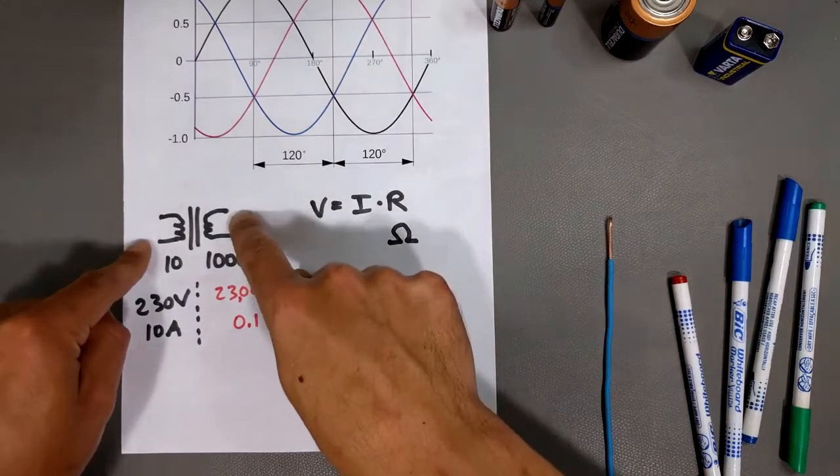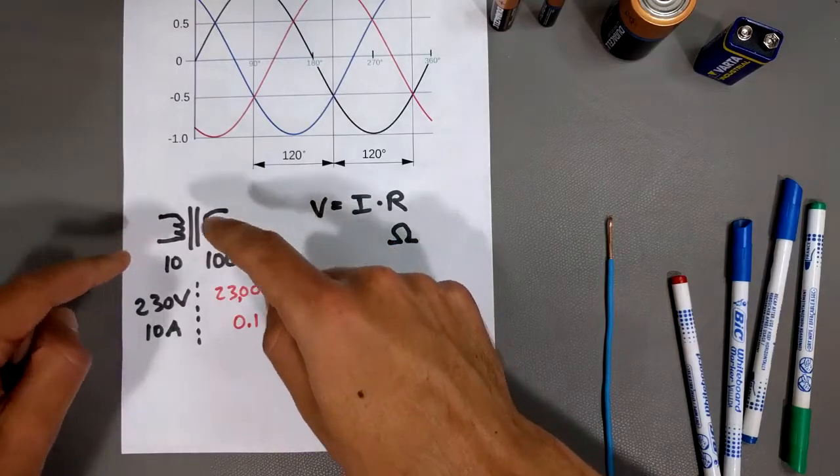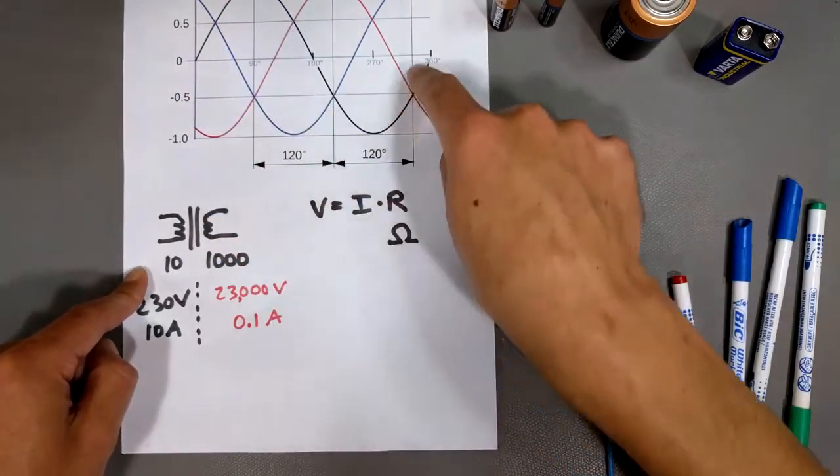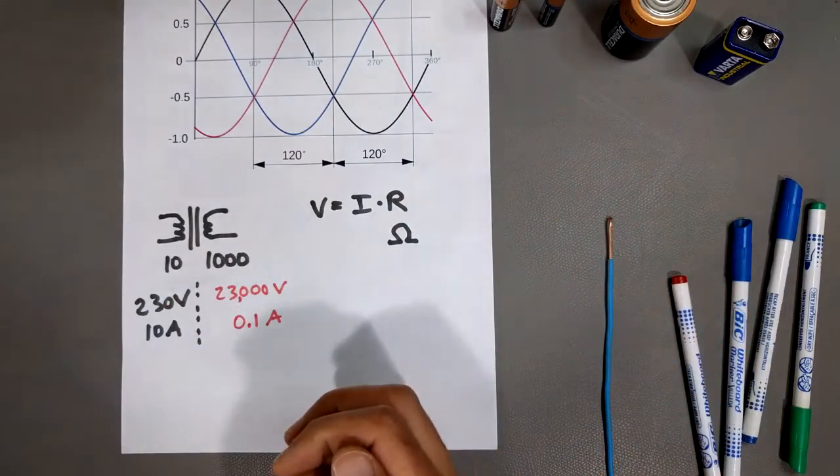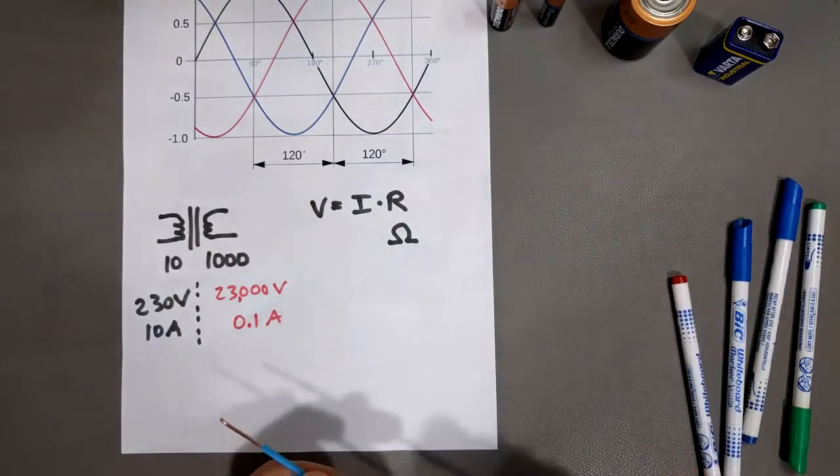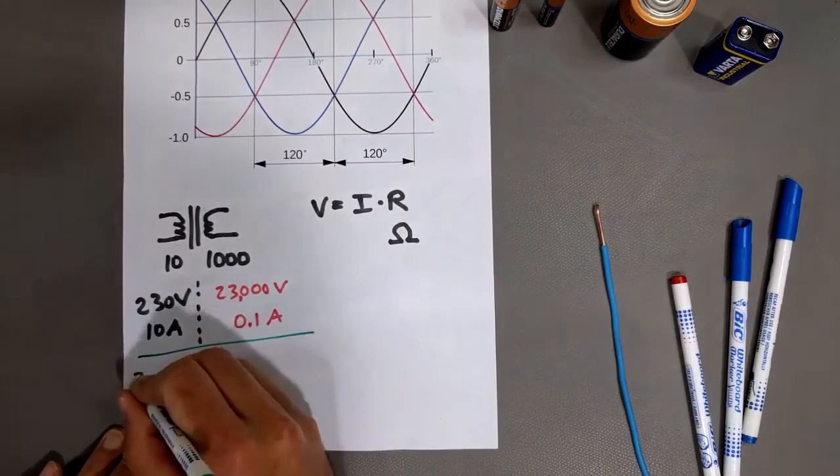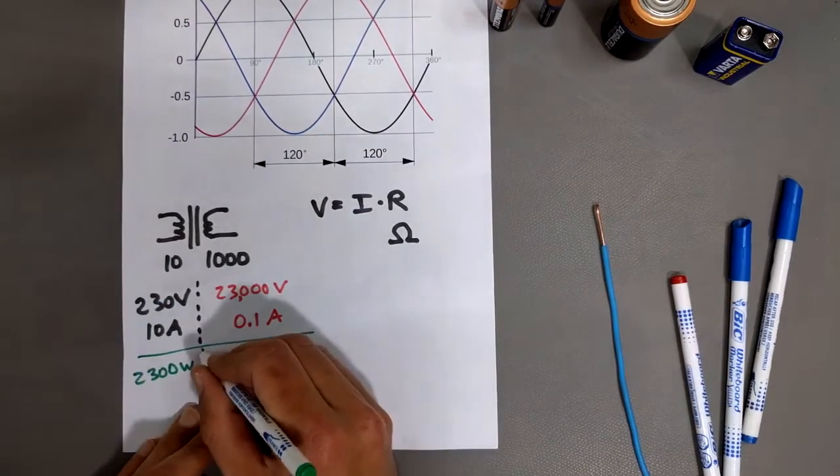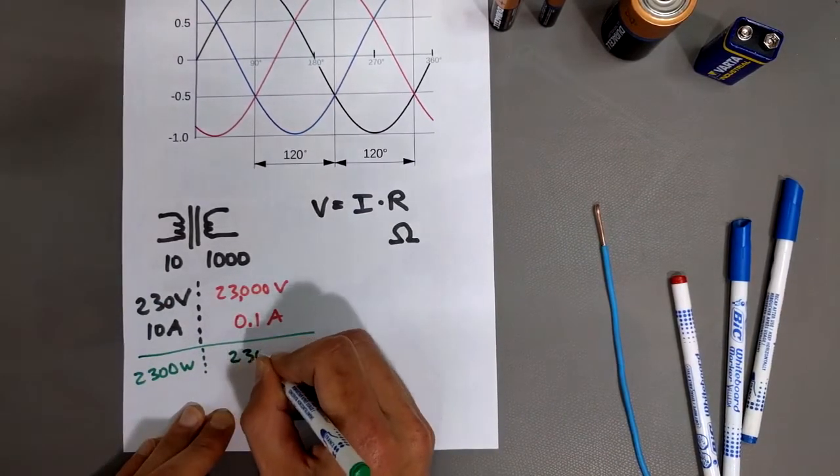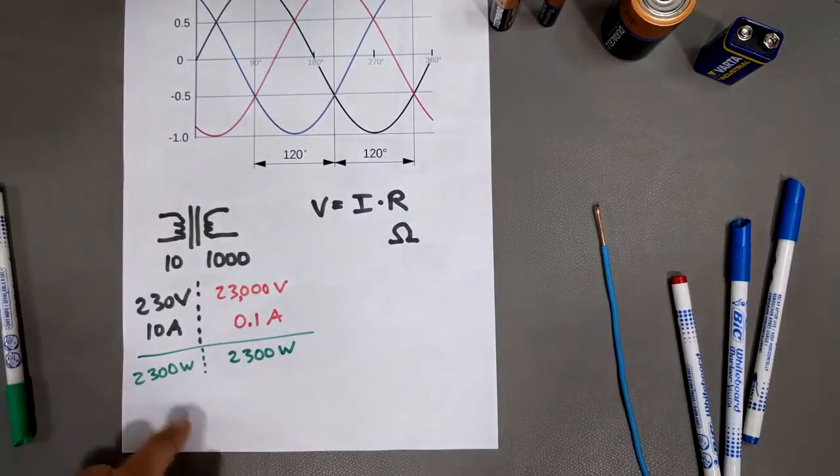But notice 23,000 times one-tenth of an amp is also 2300. So a transformer doesn't create or do anything to the power. It simply allows, due to the alternating current, it allows you to step the voltage up really high and take the current and shrink it way down. And what that means is that for a given amount of power, this is actually 2300 watts, and this is also 2300 watts. You can get a calculator and do the math.